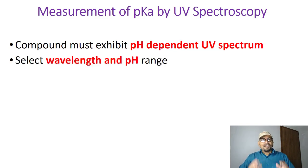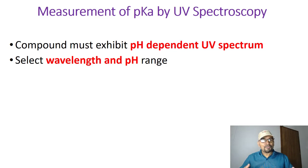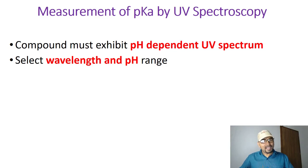The second step is to select the suitable wavelength and the pH range. You can scan the sample from 200 to 400 nanometers in UV spectroscopy and then determine which wavelength is suitable for the measurement. It can be one of your lambda max values.